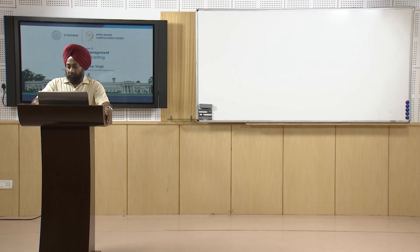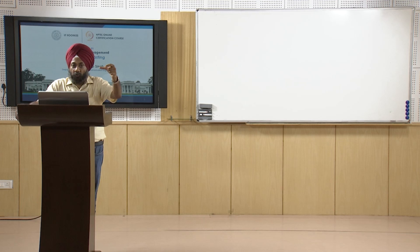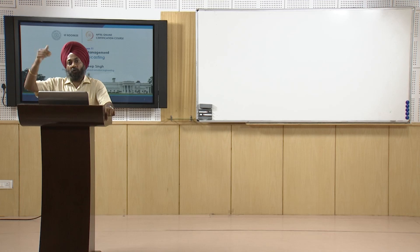Switching to the presentation on sales forecasting. According to M.J. Morone in his book on Elements of Production Planning and Control: forecasting can be a failure — it is not always possible to make an accurate forecast. As he states, economic forecasting, like weather forecasting in England, is only valid for the next six hours; beyond that it is sheer guesswork. These days, accurate forecasts are possible for short durations — a few days — but not for years ahead.